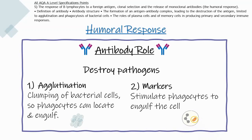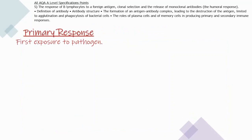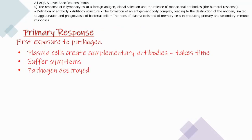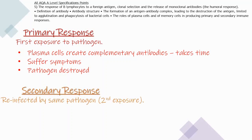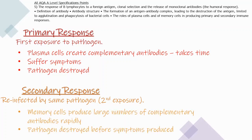The ultimate role of antibodies is to destroy pathogens. They do this by agglutination — clumping bacterial cells together so that phagocytes can locate and engulf them — and by acting as markers to stimulate phagocytes to engulf the cell. The primary response is the first exposure to a pathogen, involving plasma cells creating complementary antibodies. Because it's the first exposure, this takes time and the individual is likely to suffer symptoms. The secondary response occurs upon re-infection; memory cells produce large numbers of complementary antibodies rapidly, destroying the pathogen before any symptoms are produced. This is natural active immunity.